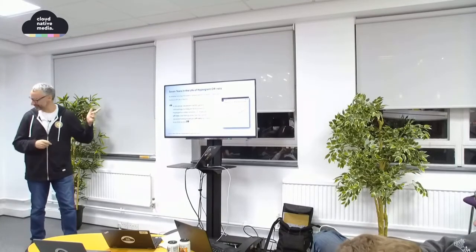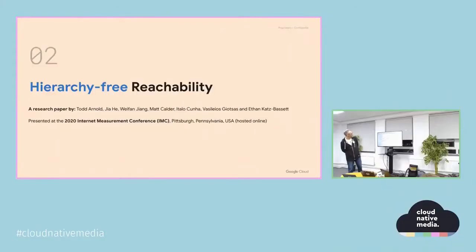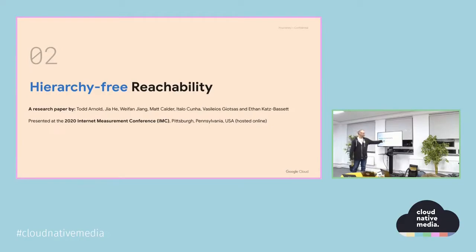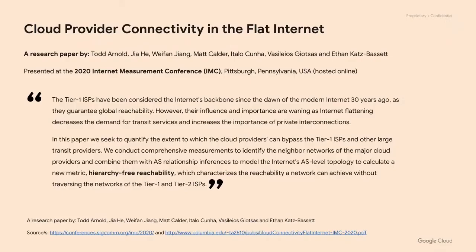The second paper is called 'Hierarchy Free Reachability,' a research paper by Todd Arnold, with Ethan Katz-Bassett also as a contributor. It was presented at the 2020 Internet Measurement Conference in Pittsburgh, Pennsylvania — online due to COVID. The premise: tier 1 ISPs were originally considered the internet's backbone since the dawn of the modern internet 30 years ago. Tier 1s could reach anywhere on the internet, and they all exchange traffic with each other.